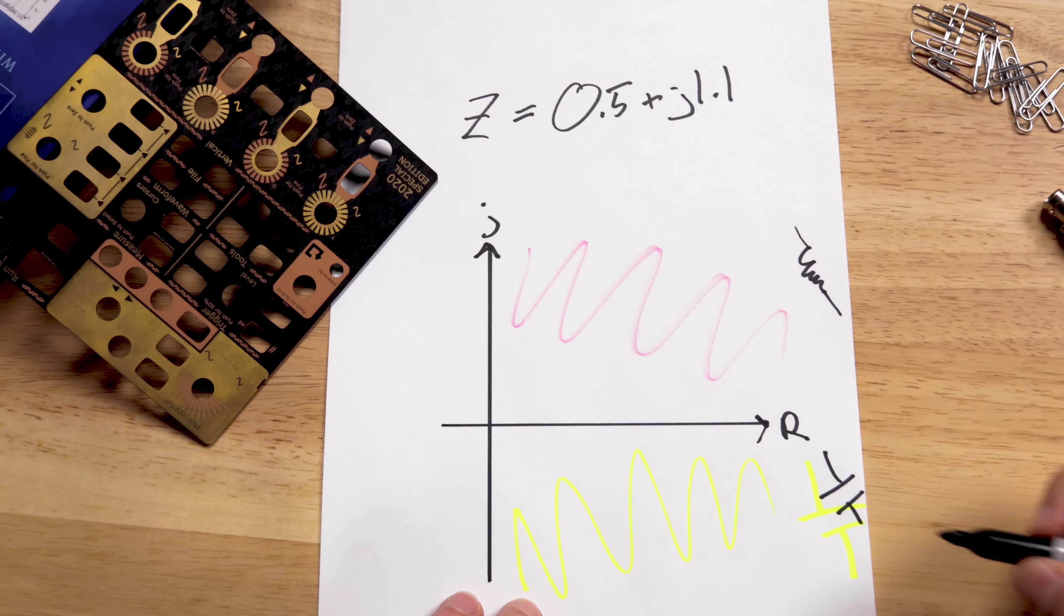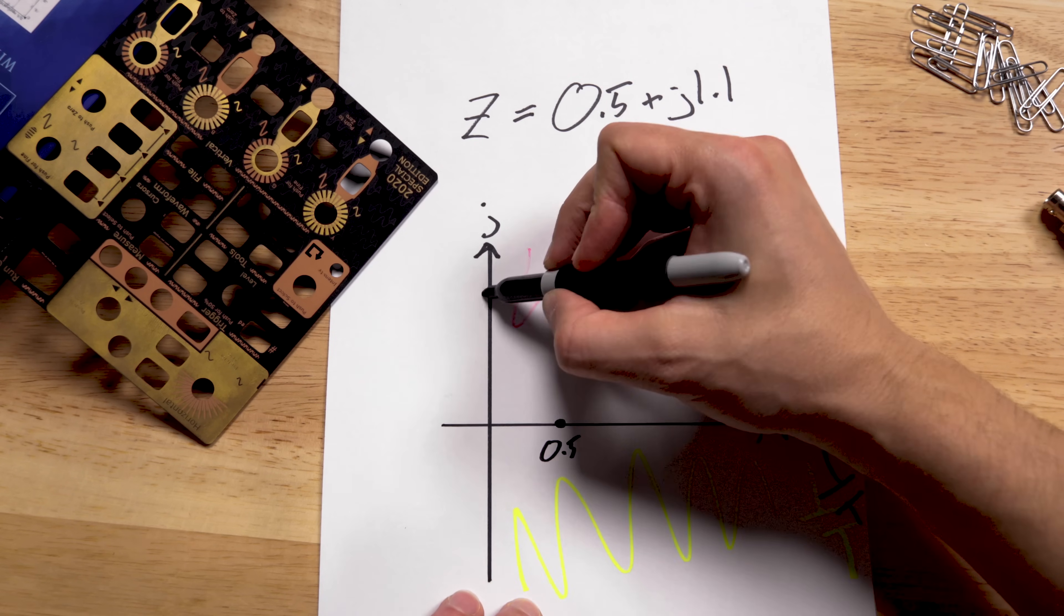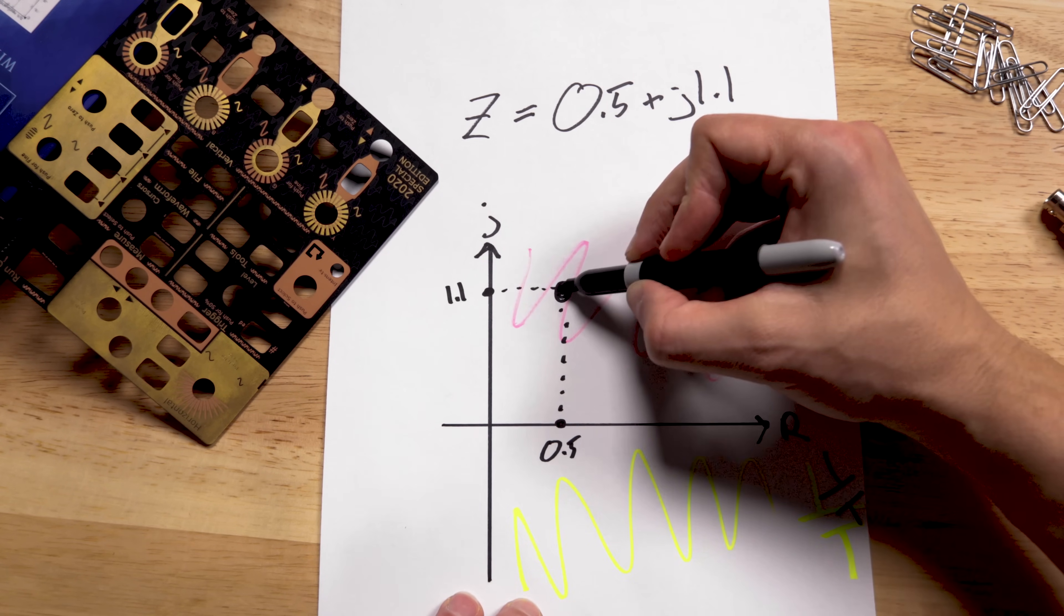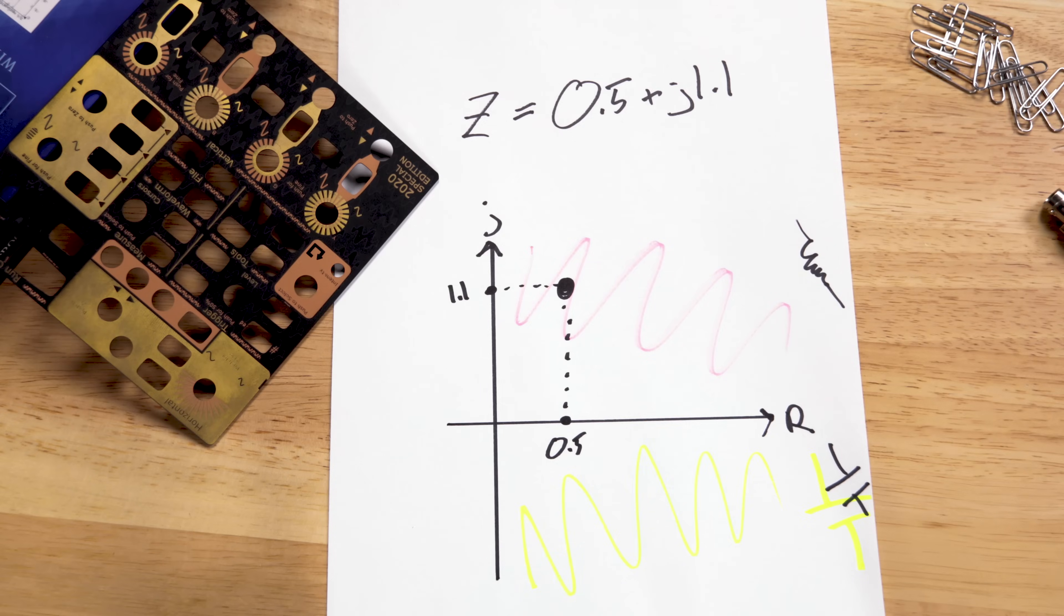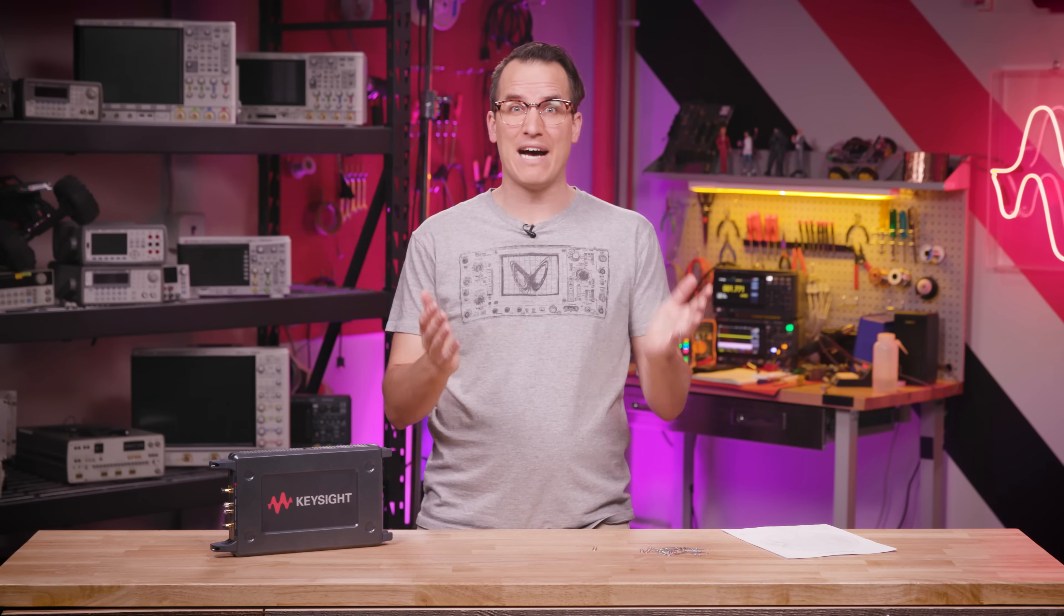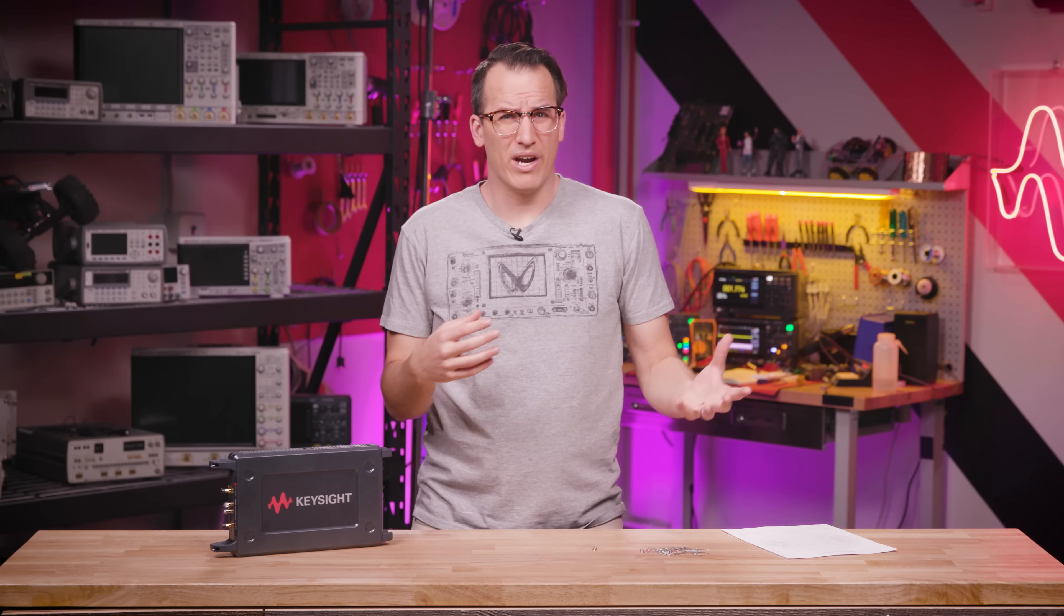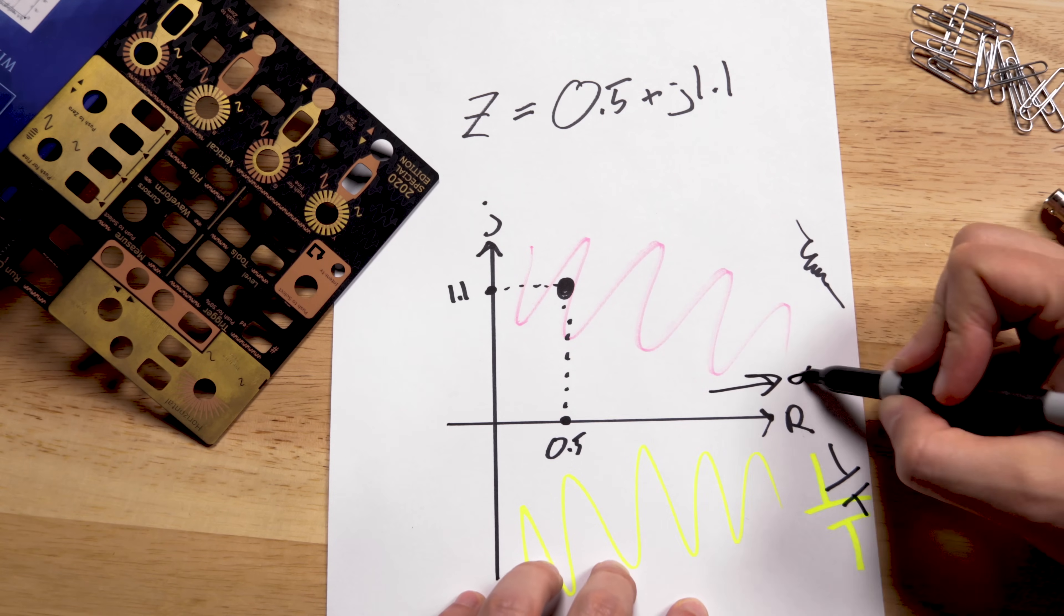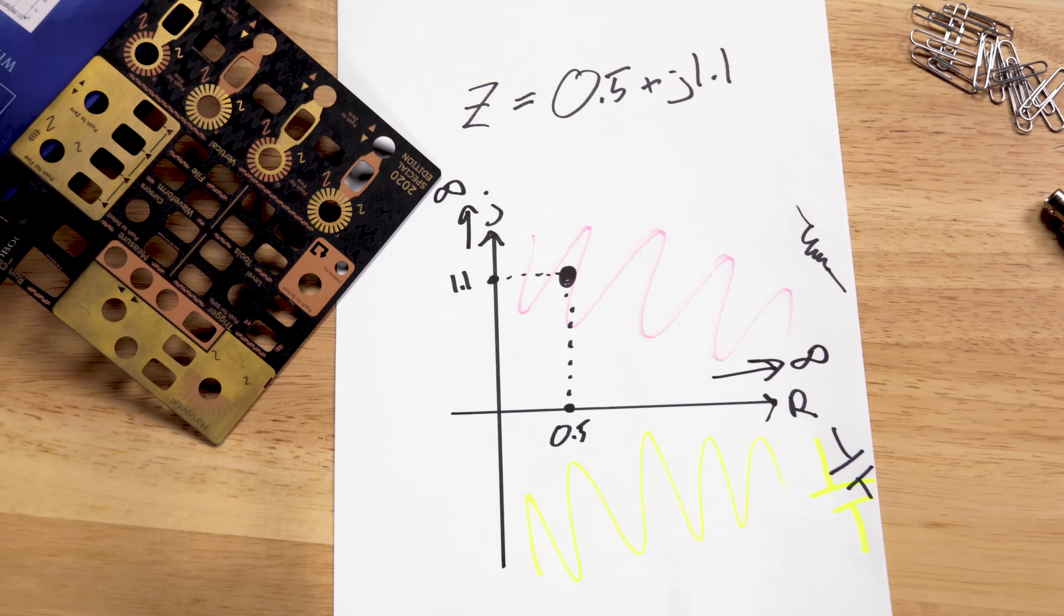And you can plot it. We can see where our real component, 0.5, and our imaginary component, 1.1, meet, and we plot it. Simple Algebra 1 stuff. A Smith chart is basically this graph, but you curl it in on itself into a circle. This might seem weird because all of these axes go out to infinity. It'd be hard to plot infinity resistance on this, but with the Smith chart we can.